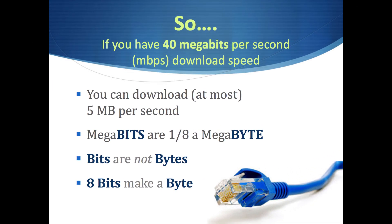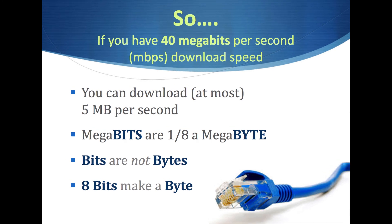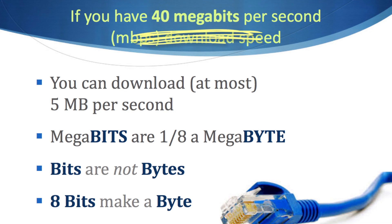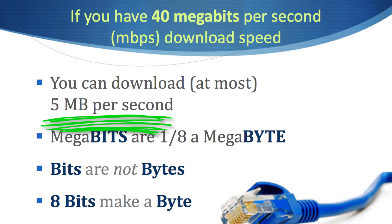Companies that provide internet access may use megabits instead of megabytes when they advertise their speeds. So if you had 40 megabits per second, you might think you can download a 40 megabyte file in a second, but you couldn't — you'd only be able to download a five megabyte file in one second. Remember, a megabit is one eighth of a megabyte. And that's it for our computer hardware intro.